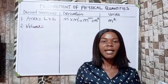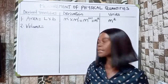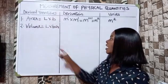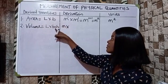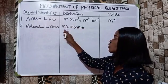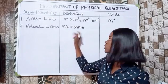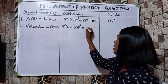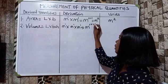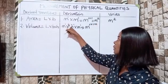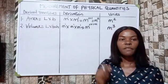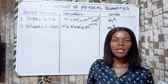Volume equals length times breadth times height. All three are measured in meters. Using the law of indices, each has a power of one. Adding the powers: one plus one plus one gives meter cubed. So the unit of volume is meter cubed.